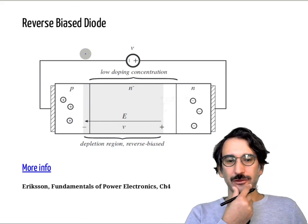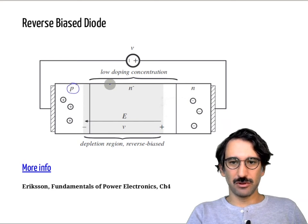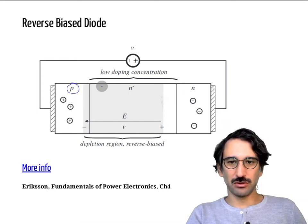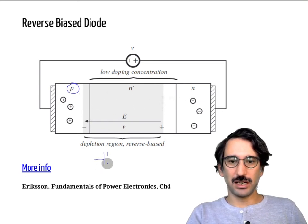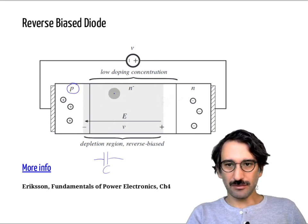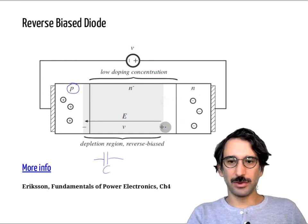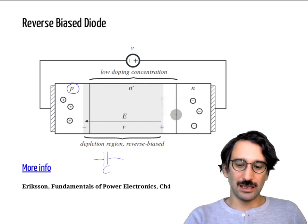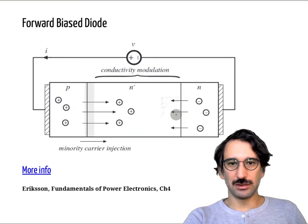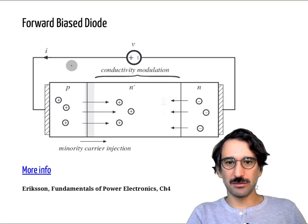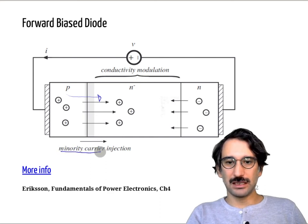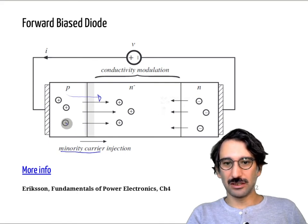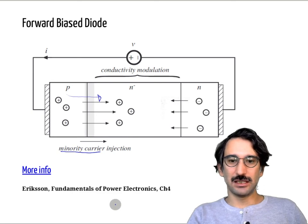Looking at the diode structure, it is a p-n junction — a semiconductor device. Importantly, whenever you have two junctions you have some capacitance between them. When you want current to flow, you first need to move those charges — either deplete or dope them. That gives the main idea behind the characteristics of a diode. In forward bias mode, current flows and you are basically injecting minority carriers from the p region into the n region, entering conduction mode.